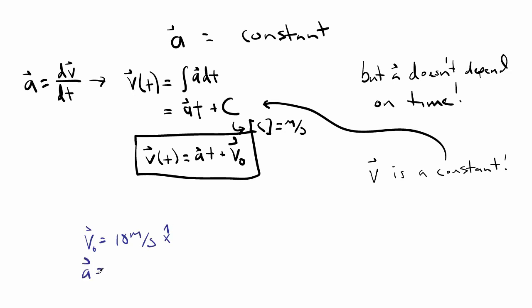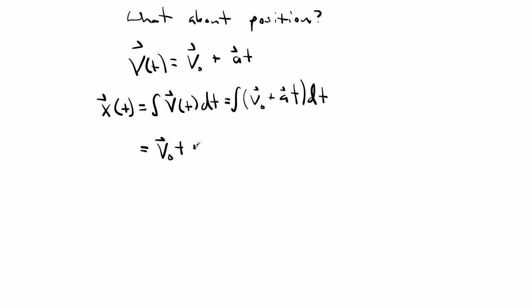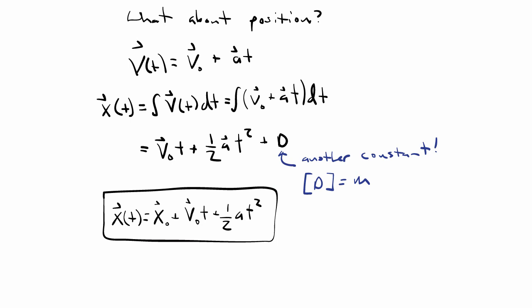So if I know the object's initial velocity and the acceleration, then I can determine the object's velocity at any point in time. Now we can integrate again, and we get the position as a function of time. The acceleration term gives me a factor of t squared, and again, don't forget the integration constant. That has to have units of position to be consistent, so we'll call it the initial position.